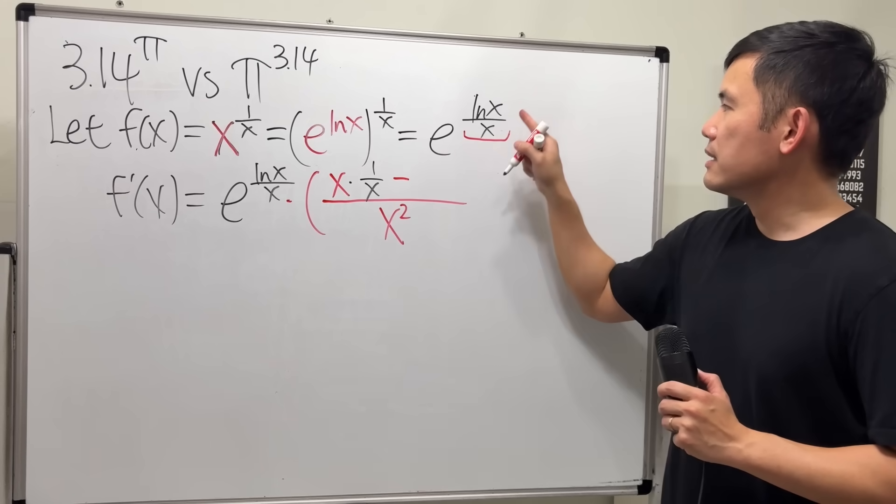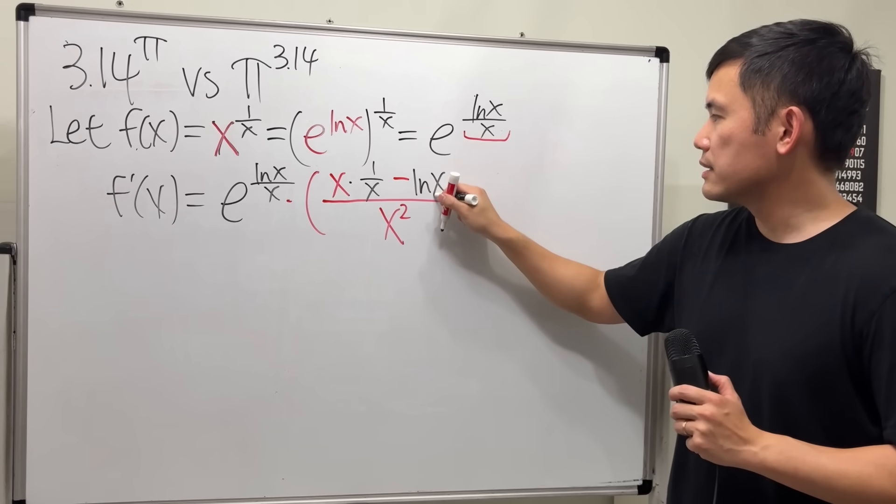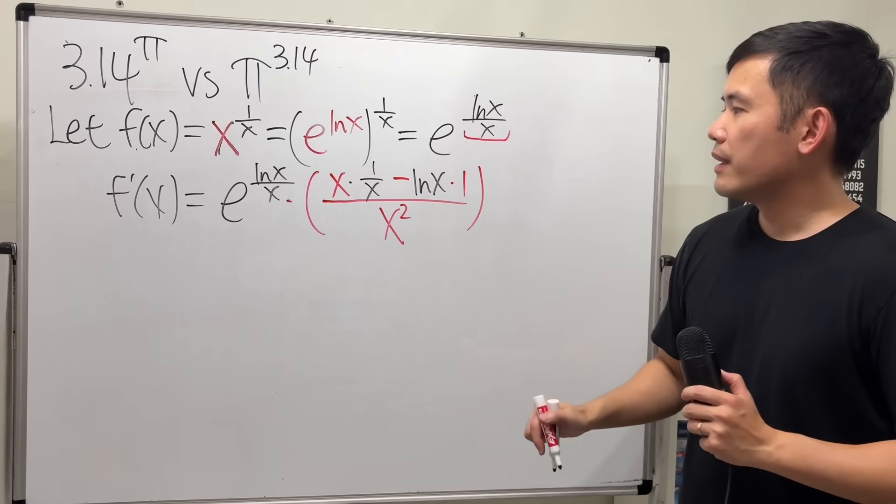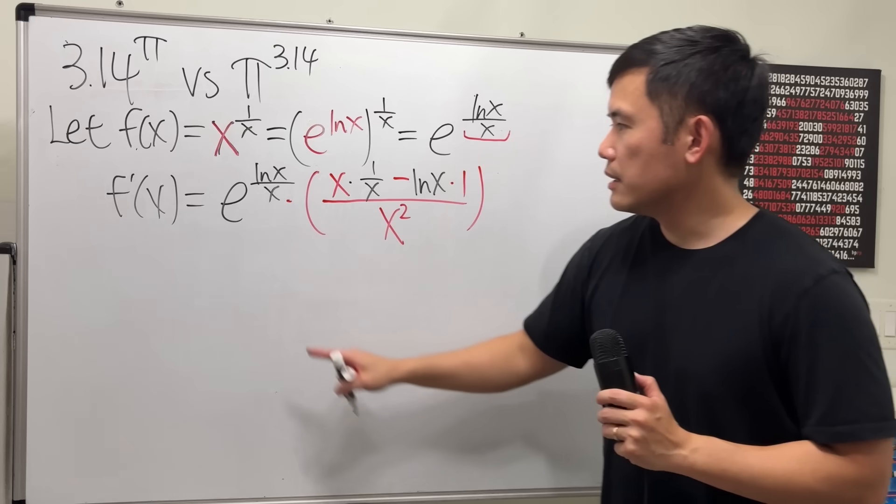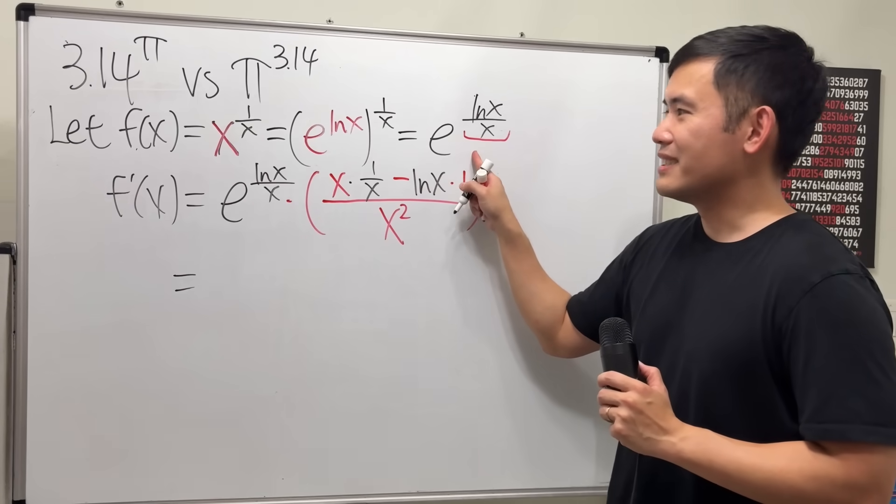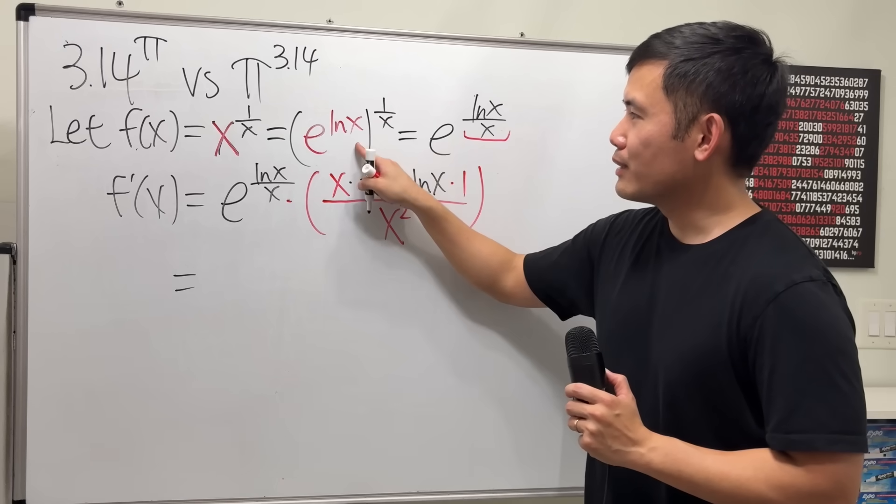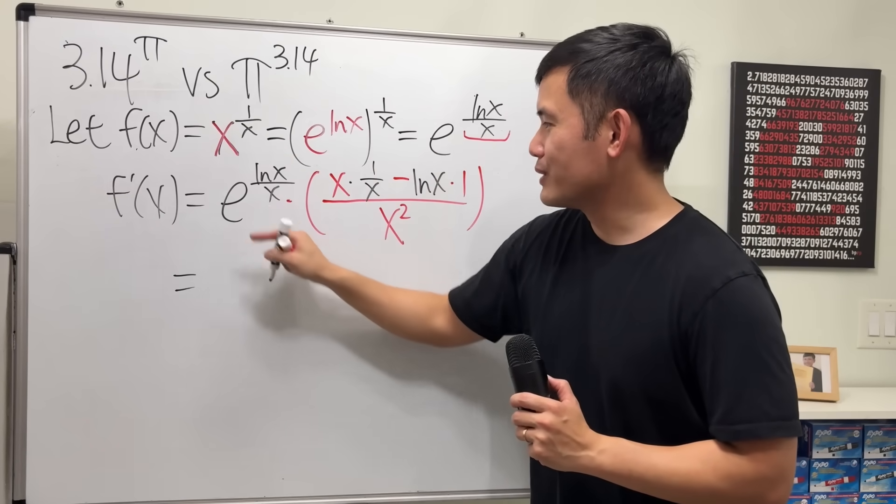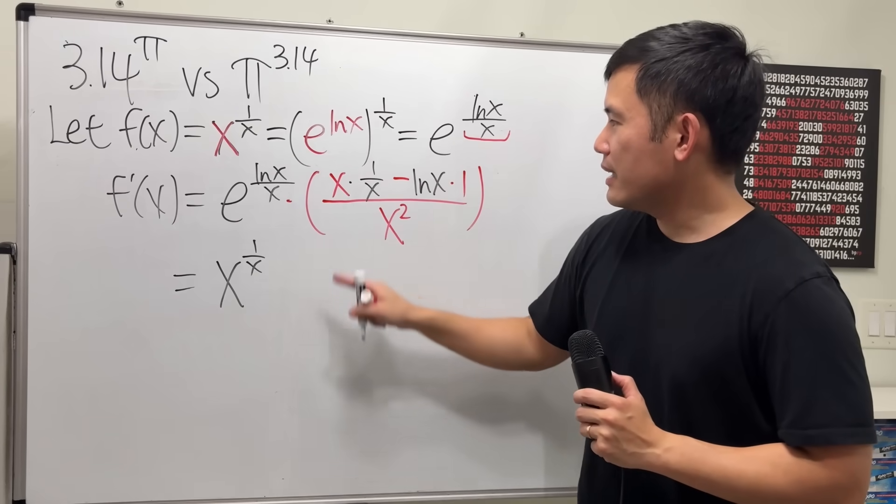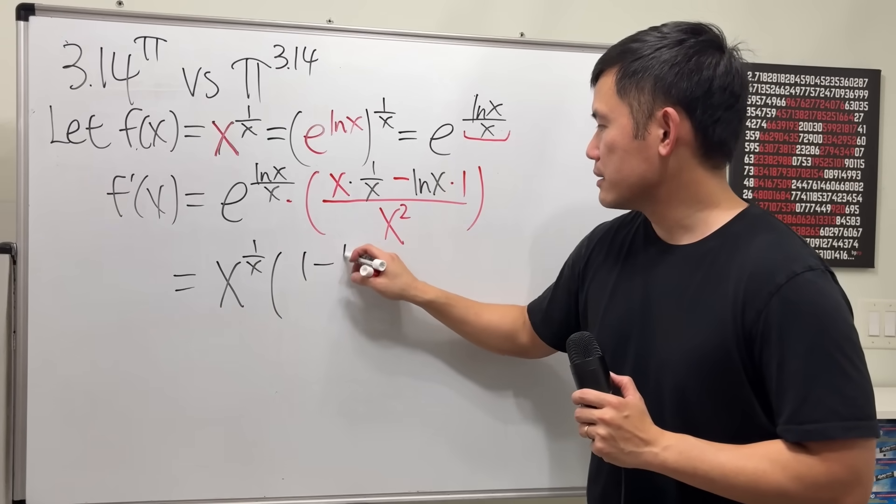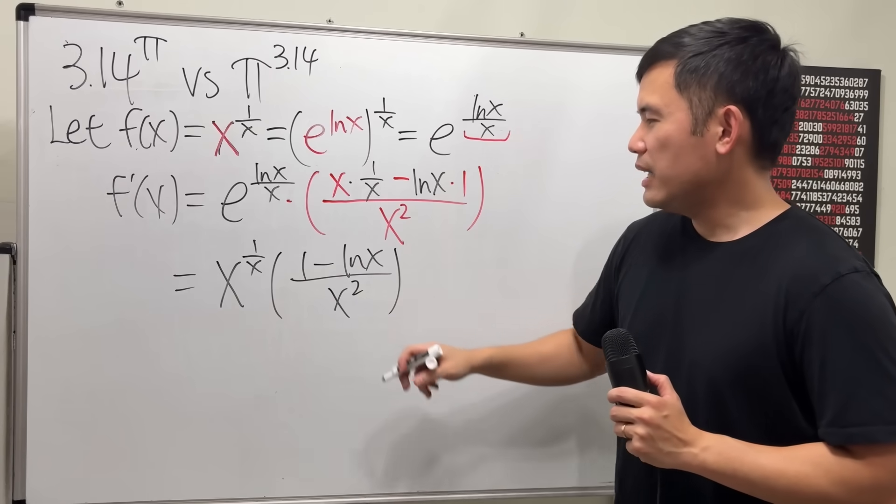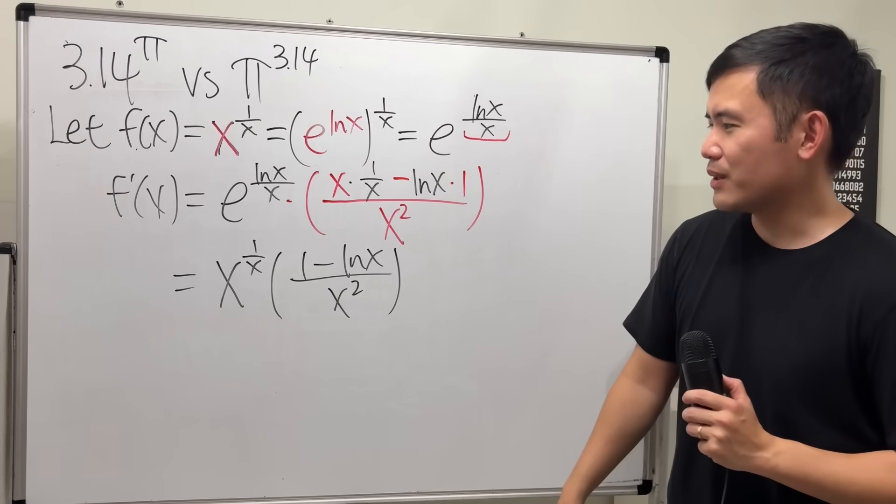And then, minus the top function, which is ln x, times the derivative of the bottom, which is just going to be a 1. And now we can simplify this a little bit. This right here is what? It's this. Which is what? It's that. Which is just that. So all that is just x to the 1 over x power. And then, this right here is just 1 minus ln x over x squared.